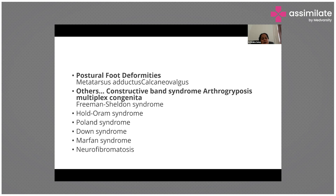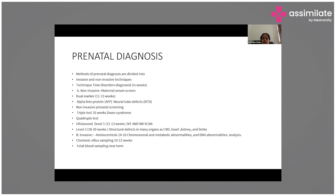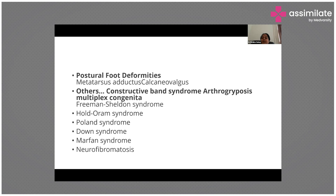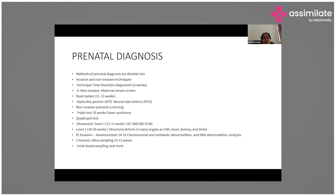Other syndromes include Möbius syndrome, Poland syndrome, Down syndrome, and Marfan syndrome. Children with Down syndrome are compatible with life and can lead a normal life, but according to guidelines, the pregnancy can be terminated if diagnosed before 20 weeks, because these children have intellectual disabilities and both child and parents face many difficulties. Now coming to prenatal diagnosis - how do we diagnose these conditions?